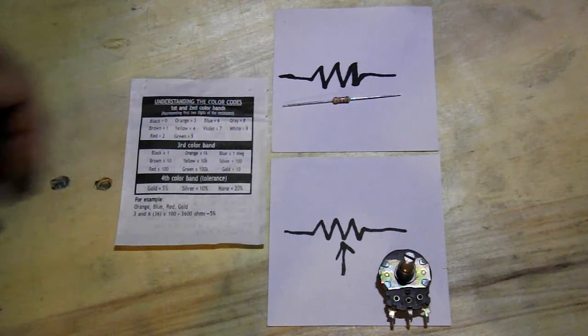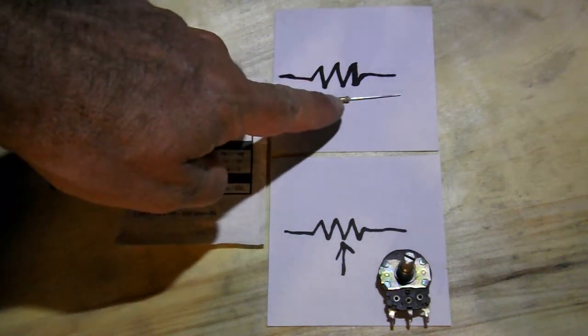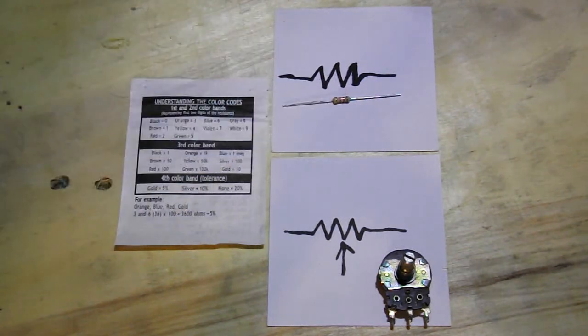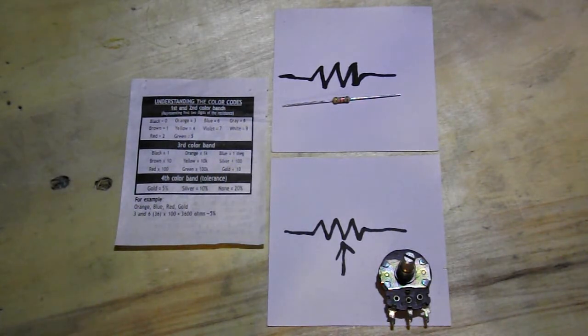This here, for example, it's a brown, black, red, and we'll get to that here in a color code in a minute. This little guy is a 1k ohm resistor. Resistance is measured in ohms, that's the name, and brown, black, red.